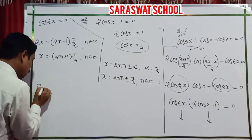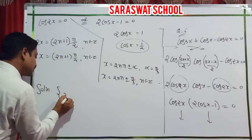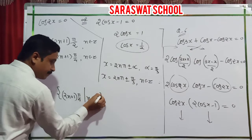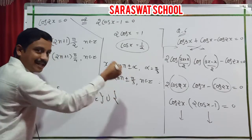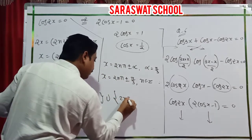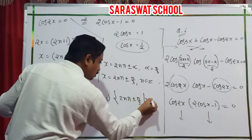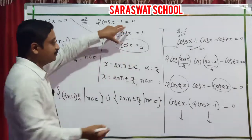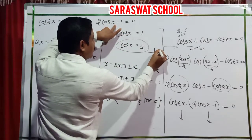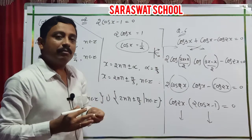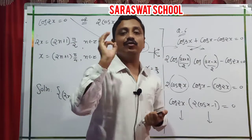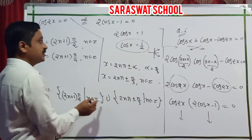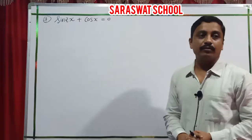Final general solutions: x equals (2n+1) pi by 4, n belongs to Z, union x equals 2n pi plus or minus pi by 3, n belongs to Z. Cos is positive in the first and fourth quadrants, but I write the least angle pi by 3. Question 6 is done.